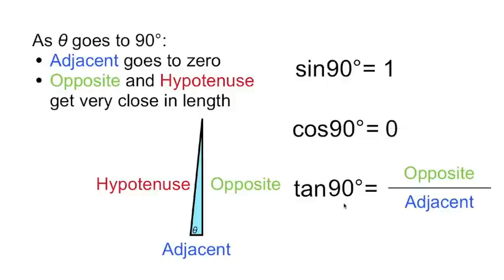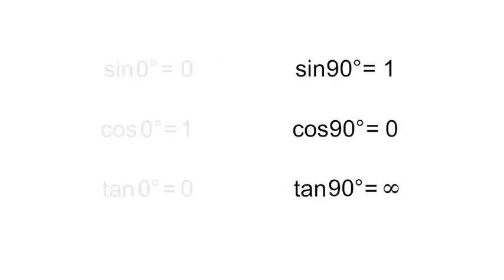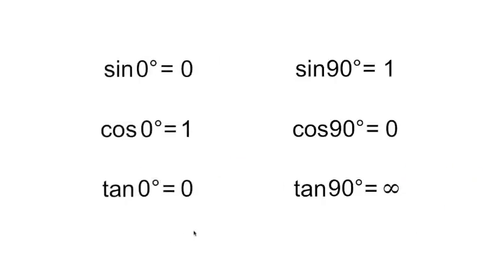And tangent is opposite over adjacent. As theta goes to 90 degrees, the adjacent goes to 0. We're dividing by 0, which technically isn't defined, but here we'll just say it's infinity. So those are the trig functions for 0 and 90 degrees.